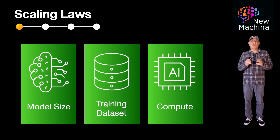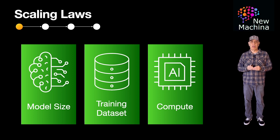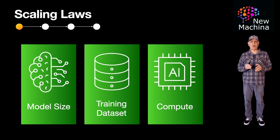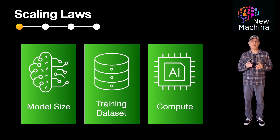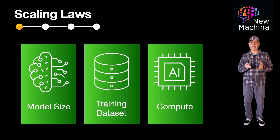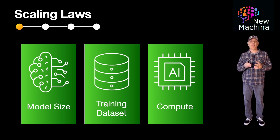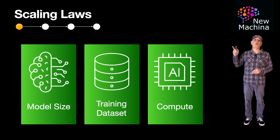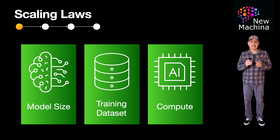Quick note: when we talk about these LLM Scaling Laws, they primarily apply to large models trained from scratch, but their principles can still provide useful insights for small models and distilled models. Distilled models don't strictly follow traditional scaling laws because they benefit from teacher-student transfer learning, allowing them to achieve better performance than an equivalently sized non-distilled model. If you want to learn more about this, feel free to check out the video I created earlier. But moving back to scaling laws.